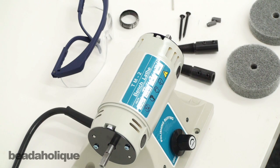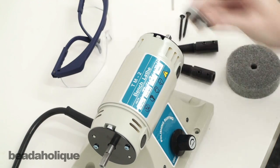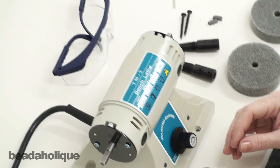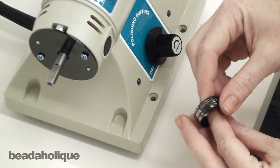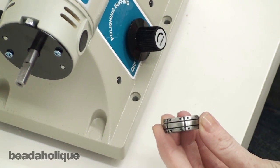Hi, this is Julie with Beadaholique.com. Today I want to show you how to use a bench top polisher. This is a great tool because it's going to allow you to take, for instance, a ring that looks like this that's all blackened and turn it into a ring that looks like that.